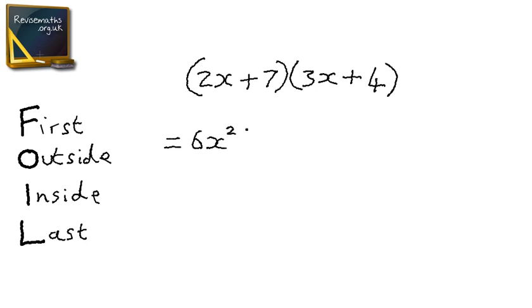Next we multiply our outside terms, 2x times 4, which is 8x. Then we multiply 7 by 3x, which is 21x, and we finish with 7 times 4, which is 28.